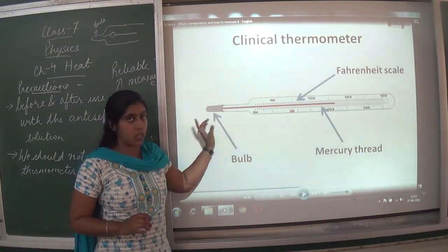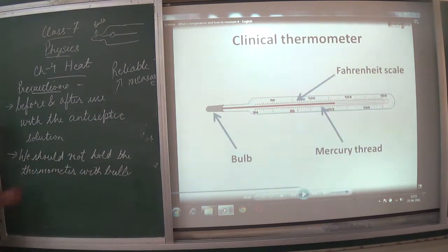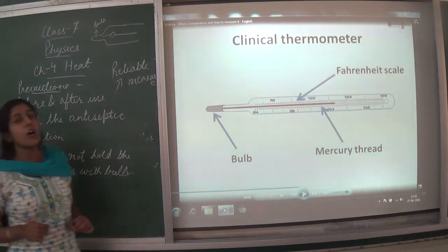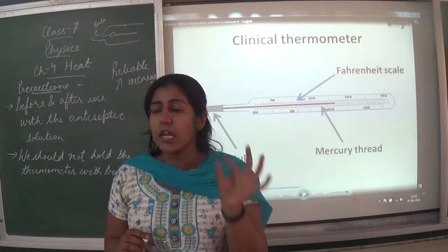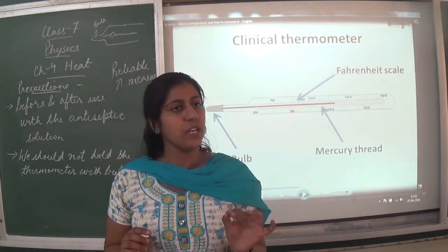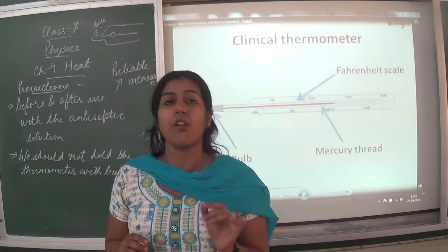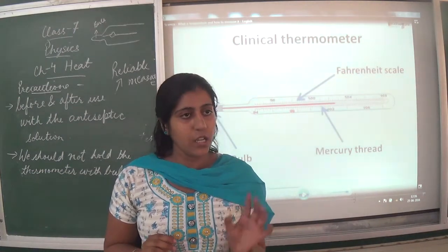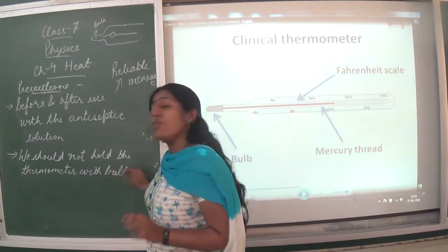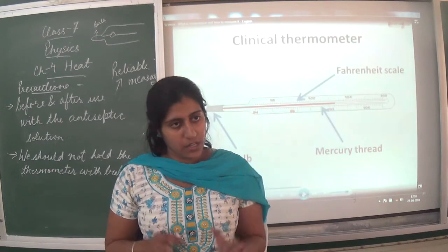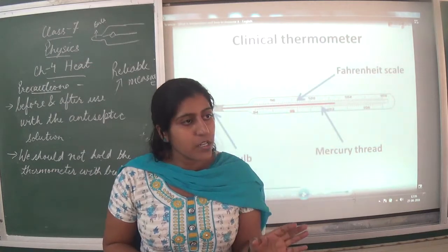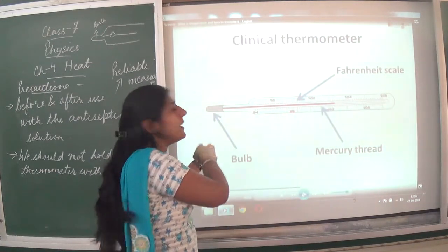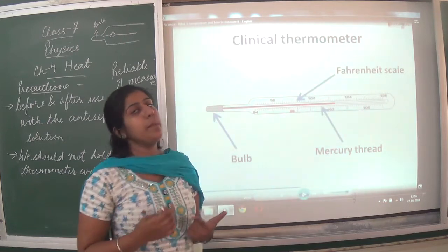Mercury is a good conductor of heat. The precaution is that we should not hold the thermometer by the bulb because mercury is sensitive to heat. If we touch the mercury with our hand, the temperature will fluctuate and we will get the wrong reading. We should not get a wrong reading, therefore we should not touch the thermometer by its bulb.